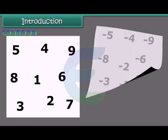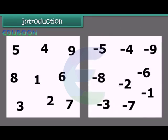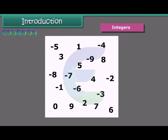Students, look at these numbers — these are the whole numbers. Now look at these numbers — these are the negative numbers. But what do we call a bigger collection of numbers which contains whole numbers and negative numbers? Those numbers are called integers. Come, let's learn more about integers.